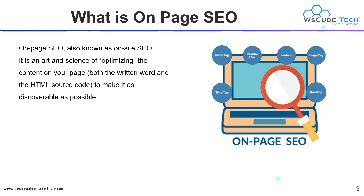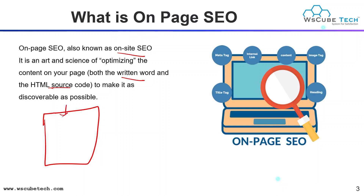On-Page SEO, which is also known as On-Site SEO, is an art and the science of optimizing the content on your page — both the written words and HTML source code — just to make it as discoverable as possible. In your On-Page SEO, let's suppose this is your website, so we will work on-site, on this particular website page.